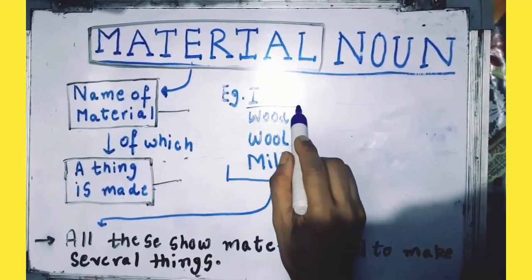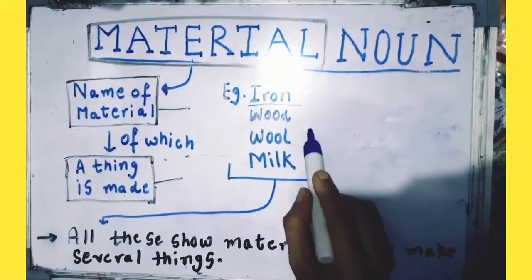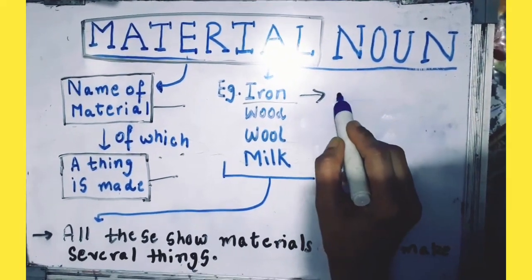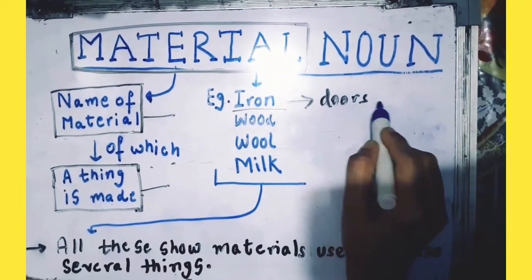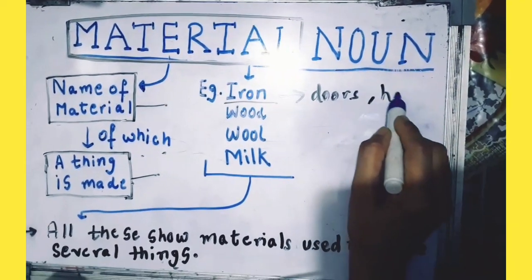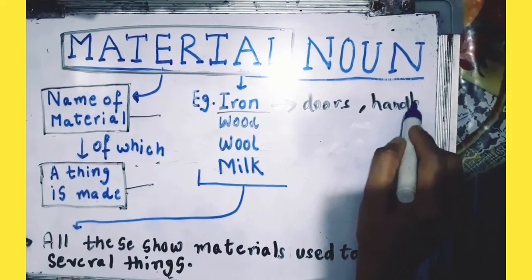The name itself suggests it is a material, means a name of material of which a thing is made, such as iron is a substance and it is used to make doors, handles, etc.